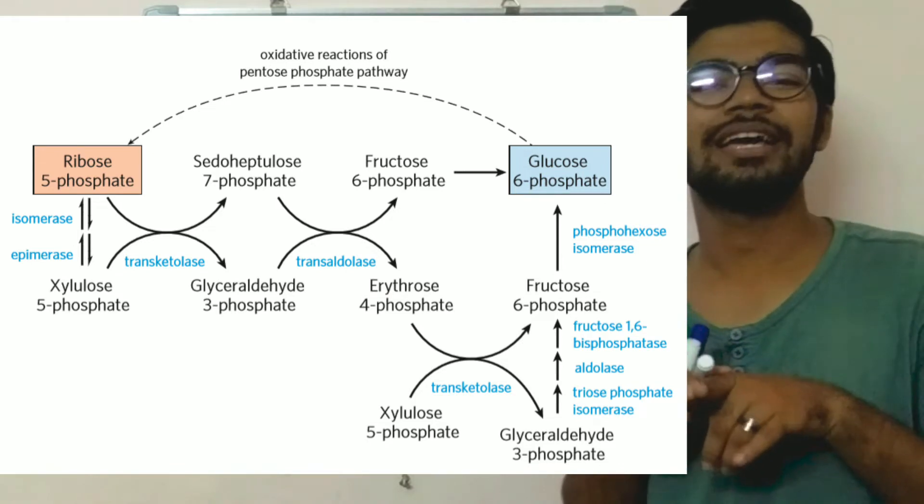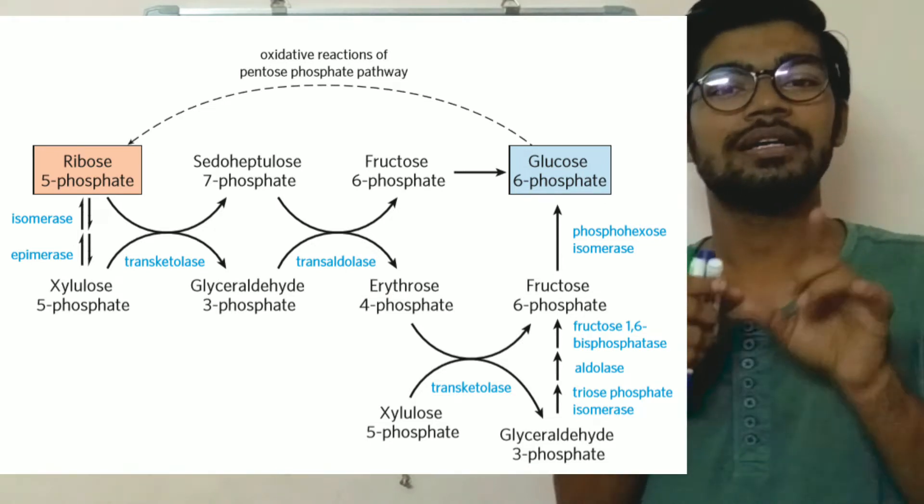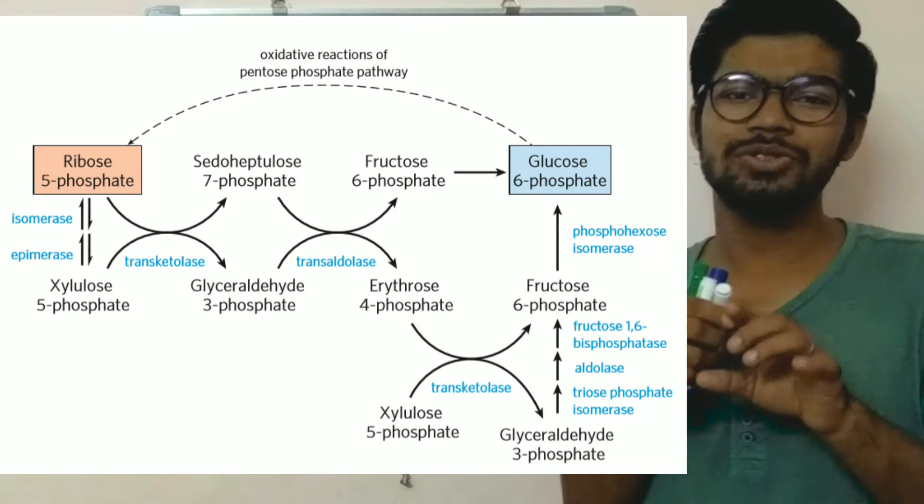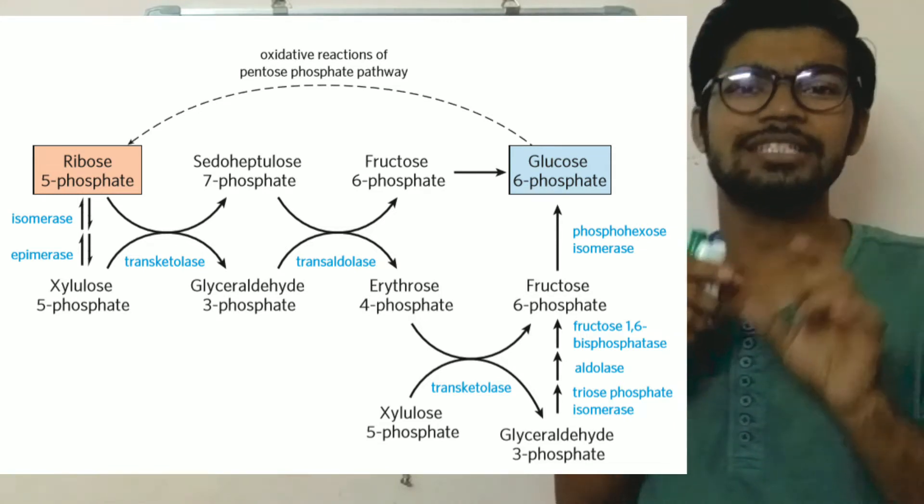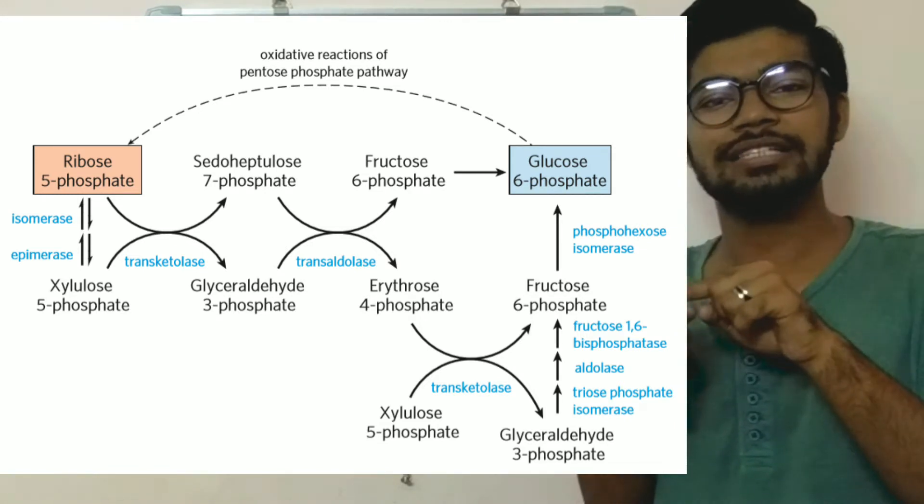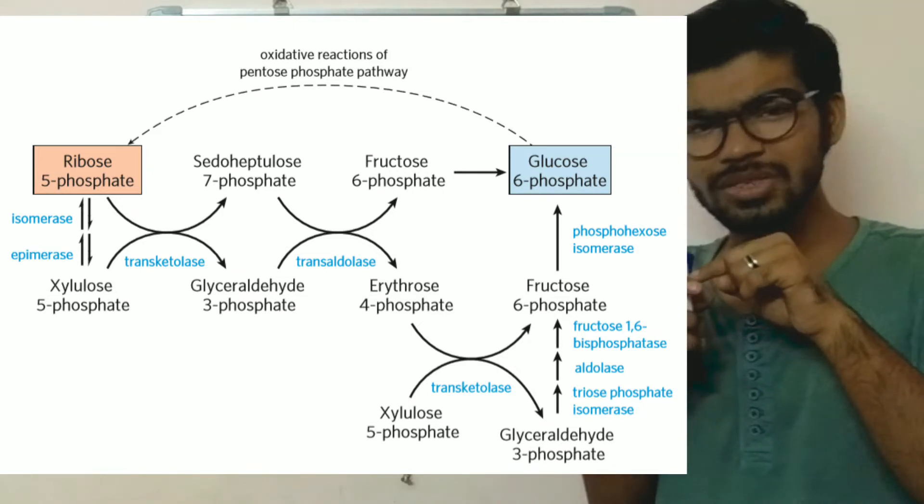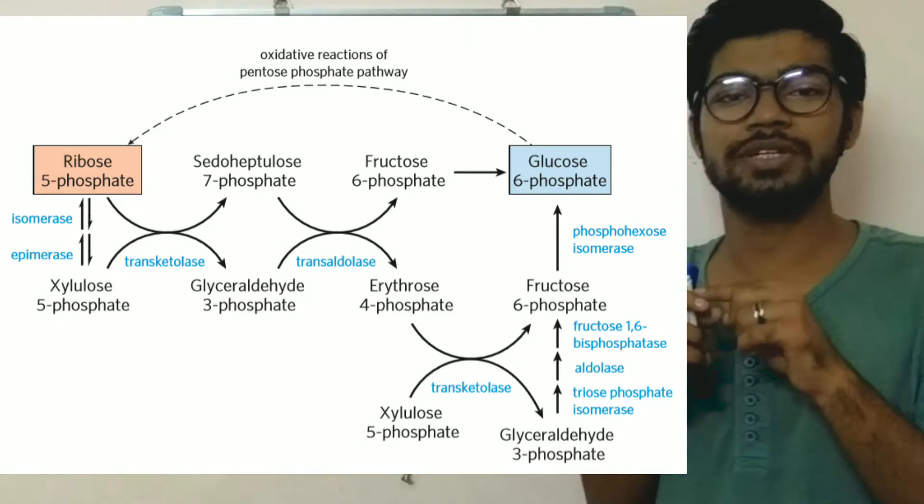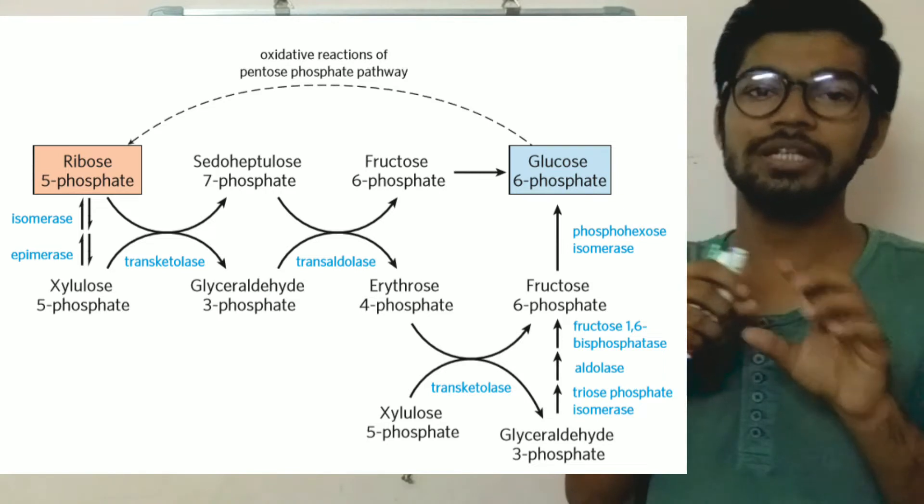Both sugars are combined and by using the enzyme transketolase, the ketose sugar xylulose acts as a donor and gives two carbons to the acceptor which is the aldose sugar ribose-5-phosphate to convert into three-carbon sugar and seven-carbon sugar which is sedoheptulose-7-phosphate and glyceraldehyde-3-phosphate.